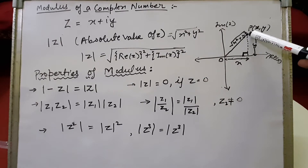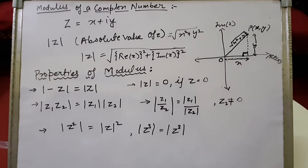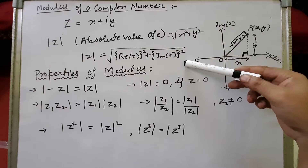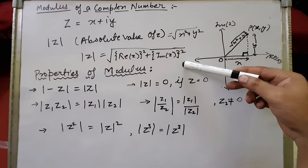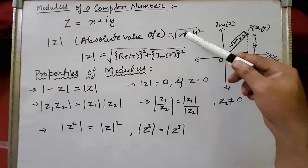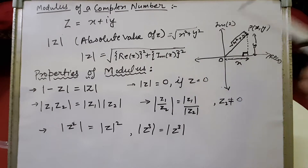That is why this is called the absolute value of z, because it is the length from the origin when plotted on the Argand plane. We can also write mod of z as under root of the real part of z squared plus the imaginary part of z squared, since x is the real part and y is the imaginary part of z.